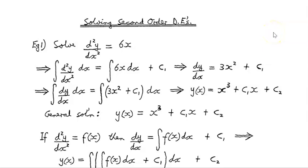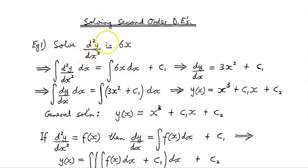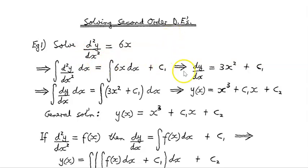In this video, we're going to look at solving second-order ordinary differential equations. Let's start with a second-order differential equation d²y/dx² = 6x, and we're going to integrate that twice. There will be two constants of integration — the first one we'll call c1, the second one we'll call c2.